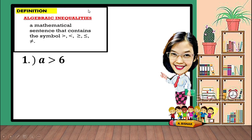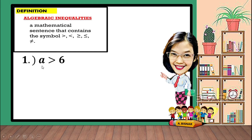For number 1, A is greater than 6. As you observed, the symbol being used is greater than, therefore it is considered as an inequality, which means the value of a will not be equal to 6 — the value of a should be greater than 6. Numbers greater than 6 include 7, 8, 9, 10, and so on. The answer is not just one value, that's why it is considered an inequality.